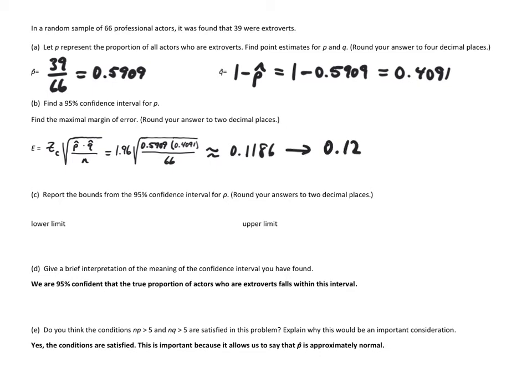Lower limit is P hat minus E. Upper limit is P hat plus E. So if we take 0.5909 and subtract 0.12, that'll give us 0.47. So that's our lower limit.